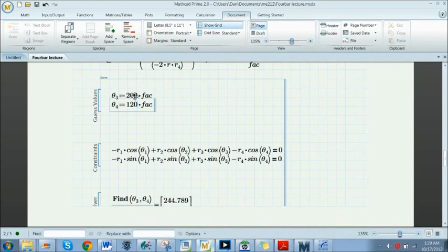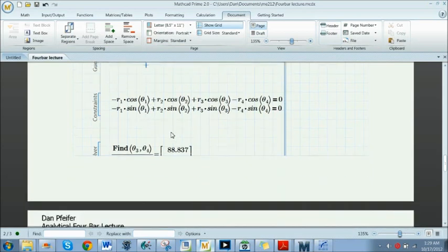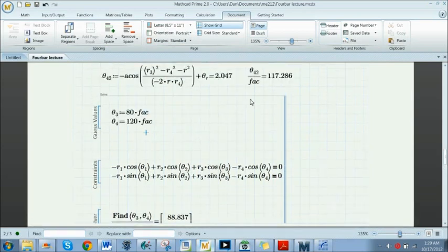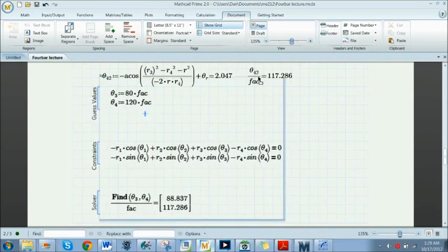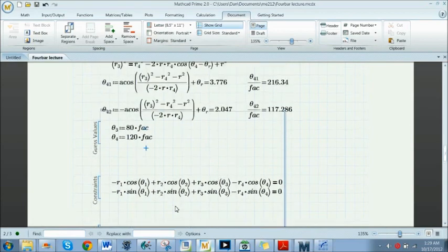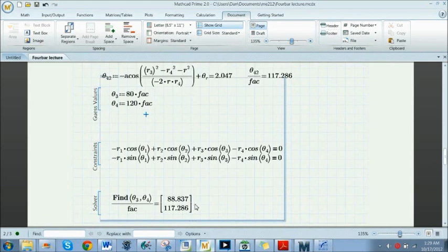So now if I change my initial guess here to something close to 120, and this one we said was like around 80-ish - I know I'm cheating a little bit - but then that's the other way to get the second solution. We will find that it's 117.286.